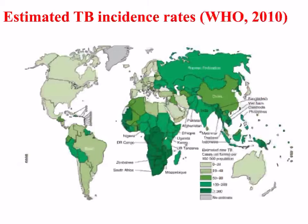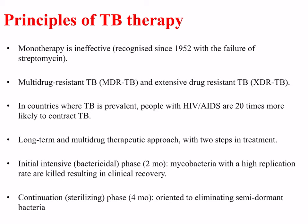The map on this slide from the World Health Organization shows the estimated cases per 100,000 people worldwide. Countries with low numbers tend to have vaccination programs with the BCG vaccine. Most cases are concentrated in sub-Saharan Africa, where there is also a high incidence of HIV/AIDS. Monotherapy is ineffective, recognized since 1952 with the failure of streptomycin; there is now multi-drug resistant TB and even extensive drug-resistant TB. In countries where TB is prevalent, people with HIV/AIDS are 20 times more likely to contract TB.